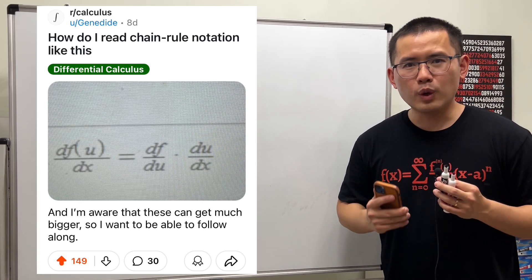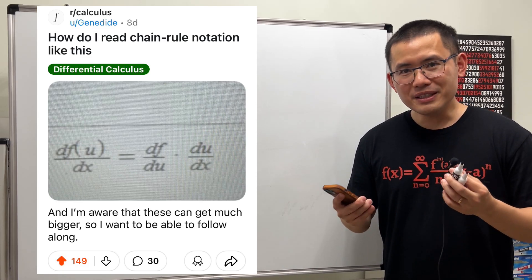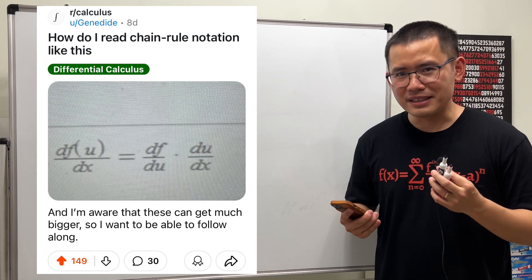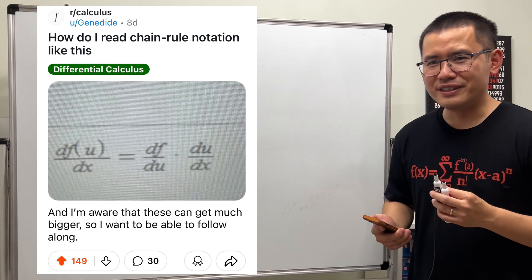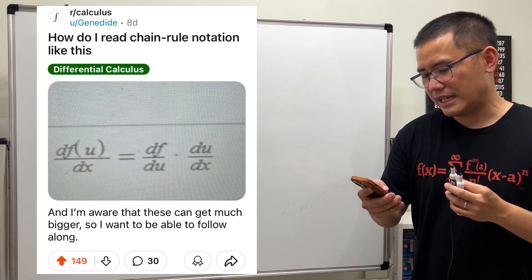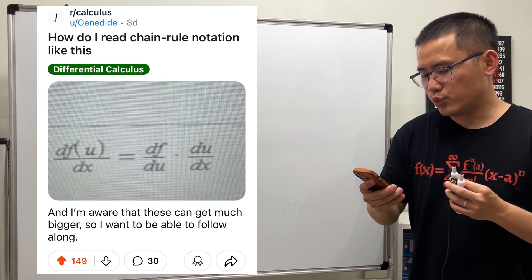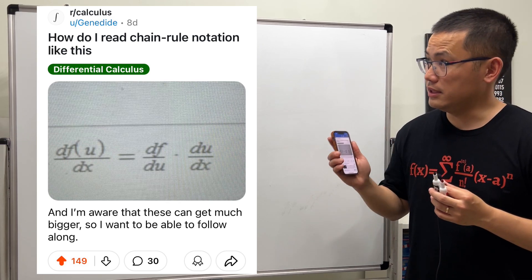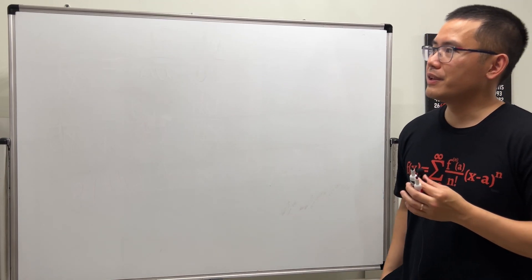I just saw this on Reddit and I really want to go over this with you guys because I said something that I was not supposed to say in my calculus videos, so I want to clarify this. The main question right here is how do I read the chain rule notation like this.